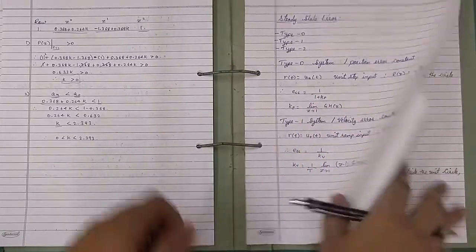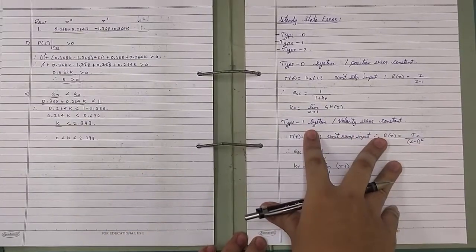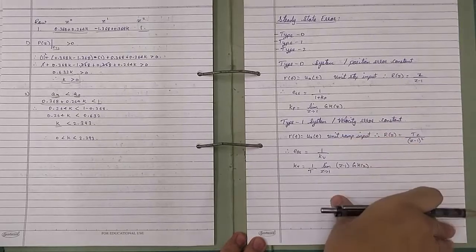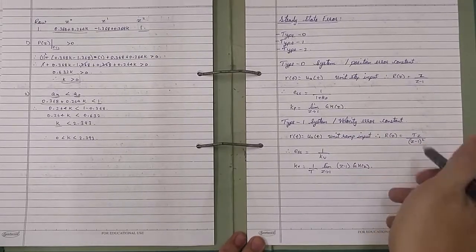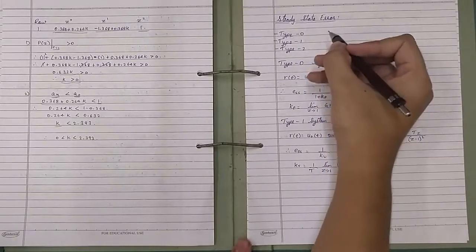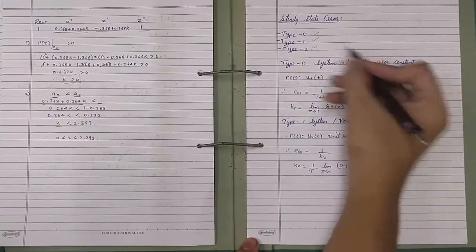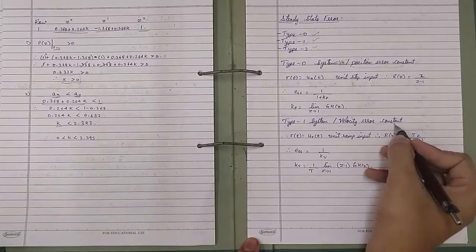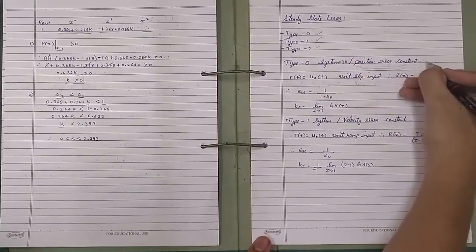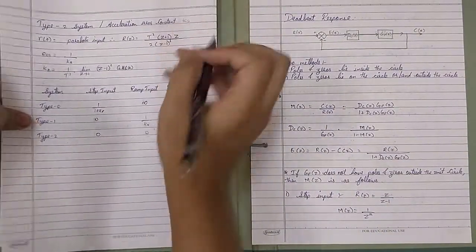The next topic is steady state error. We have three types of systems: Type 0, Type 1, and Type 2. Type 0 is also called the position error constant (Kp), Type 1 is the velocity error constant (Kv), and Type 2 is the acceleration error constant (Ka).